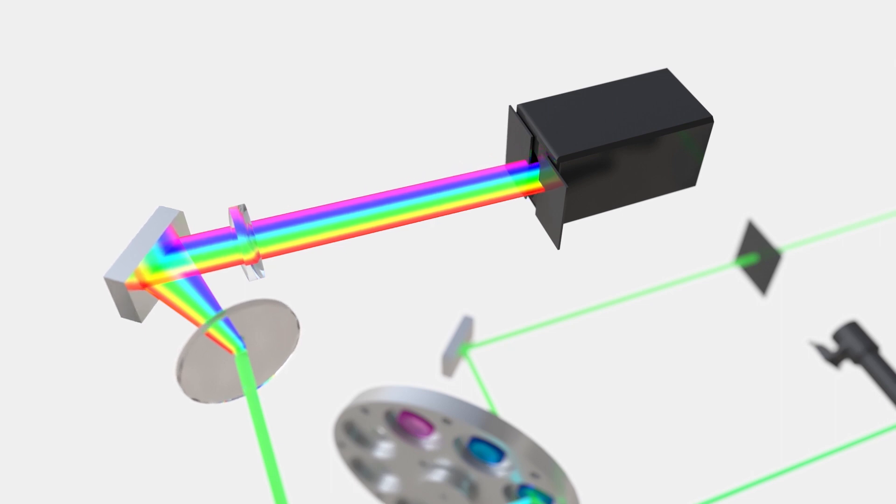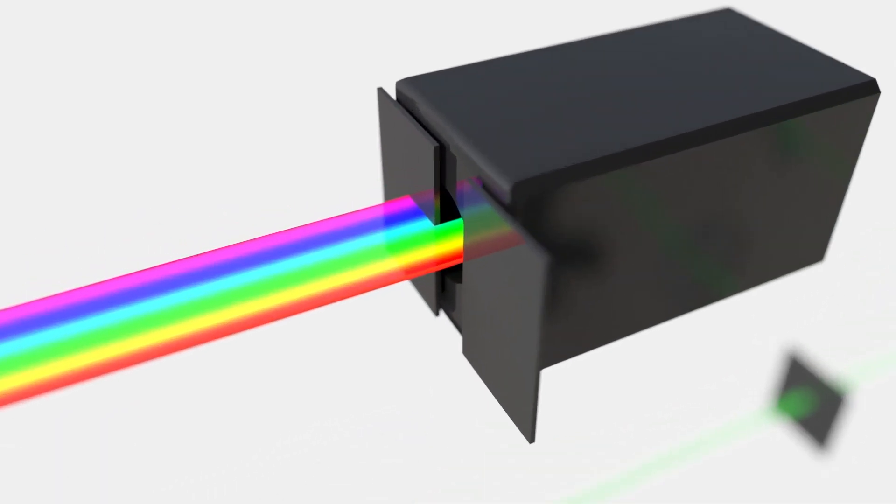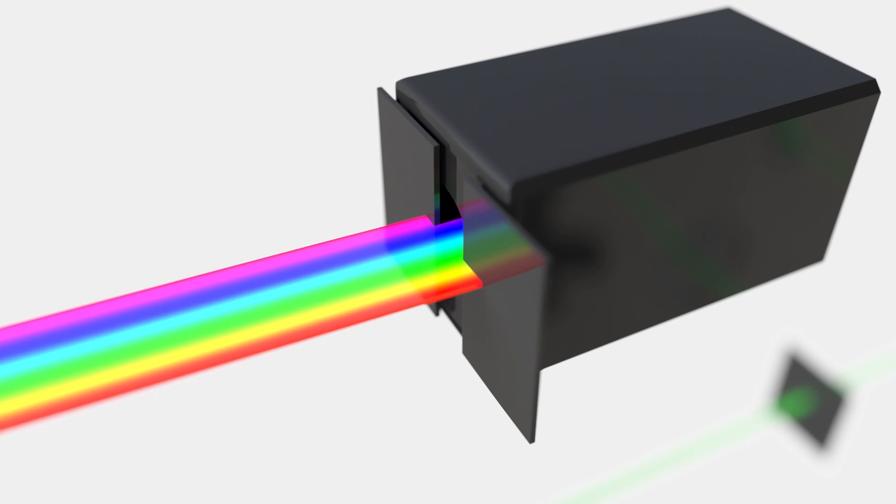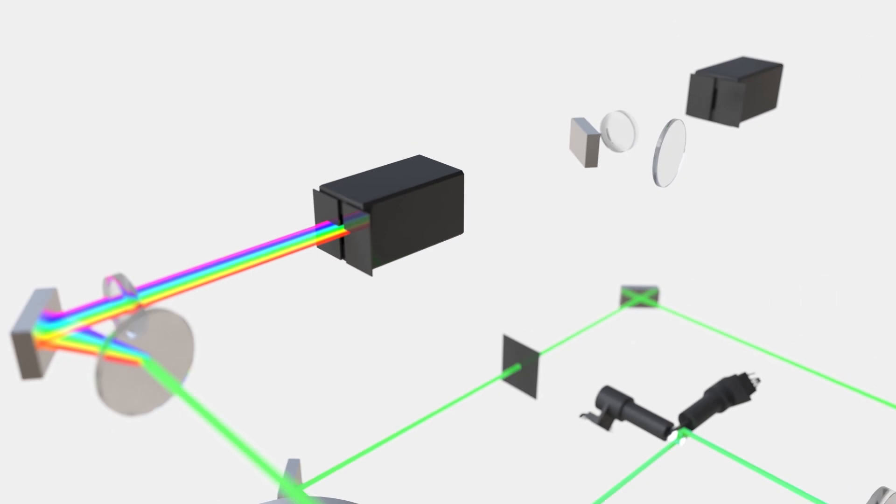A motorized adjustable slit in front of the TrueSpectral detector creates bandwidths from one nanometer up to 100 nanometers, giving users maximum control over the light they collect.